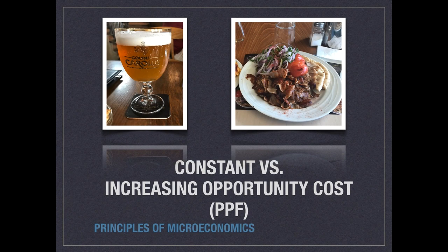Welcome to the next installment in my video lecture series in economics. In this particular video I'm going to be taking a look at constant versus increasing opportunity cost, and using the production possibilities frontier as a vehicle to show you the difference between these two. This is something that students often get confused about — understanding the difference between constant versus increasing opportunity cost and how that assumption impacts the shape of the production possibilities frontier.